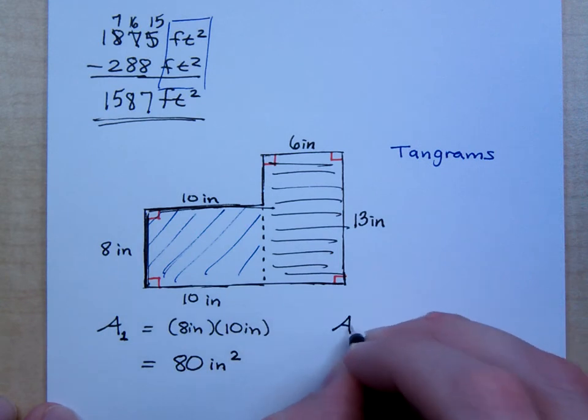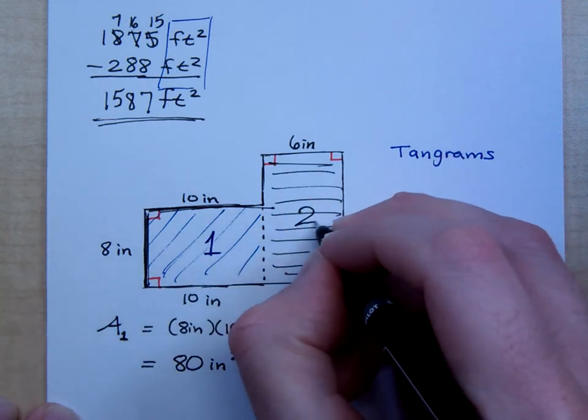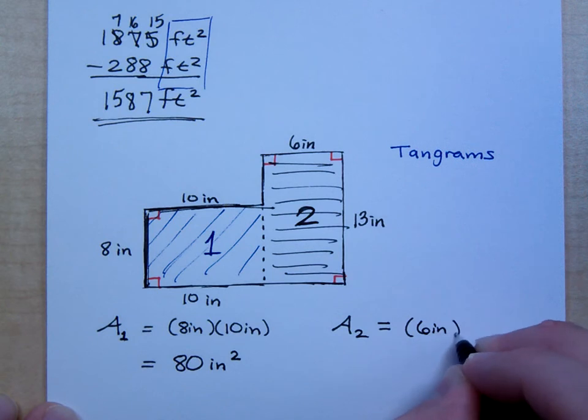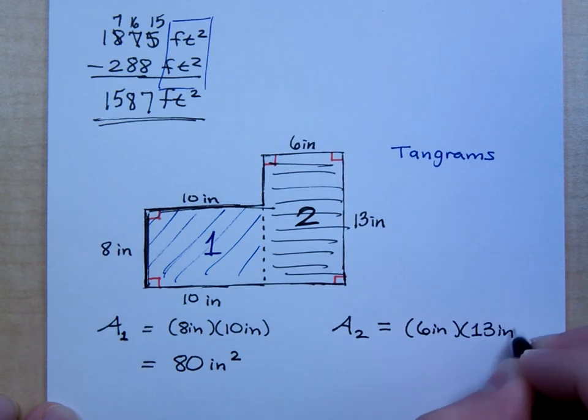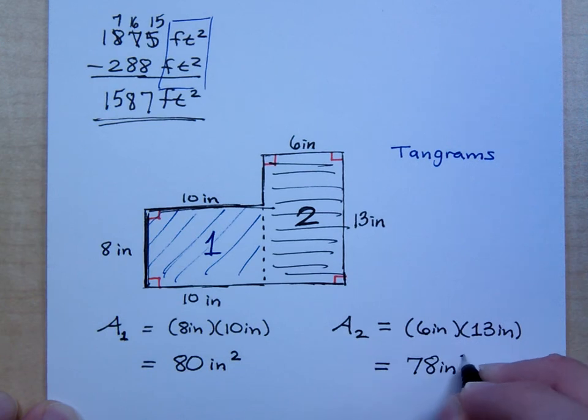Now the area of the second piece. We're calling this guy the first piece and this one the second piece. How would you figure out the area for the second piece? Same way. The base times the height. Now I've got a question for you. I'm doing 6 times 13. What if somebody does 13 times 6? It's the same thing, right? Because multiplication has that commutative property. And what's 6 times 13? This gives me 78 square inches.